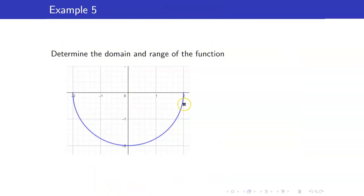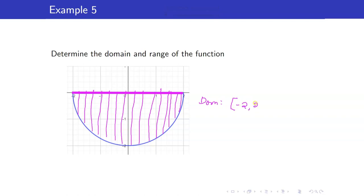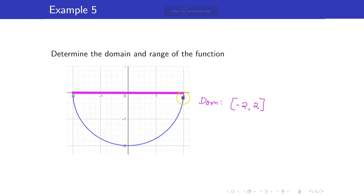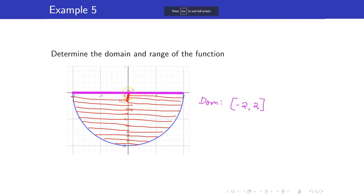For our last example, we have a semicircle. Let us get all the possible x-coordinates, and we will be able to cover everything from negative 2 up to 2. Our domain is negative 2 up to 2. Whereas for the range, let us project it along the y-axis to get all the possible y-coordinates. We were able to cover everything on the y-axis in that region. Our range is from negative 2 up to 0.